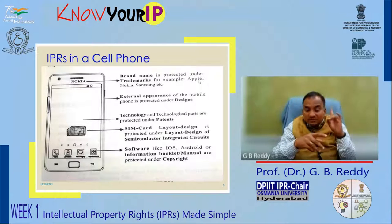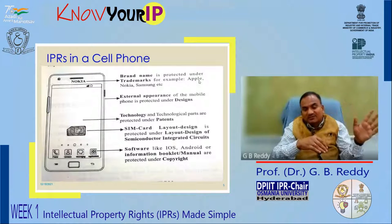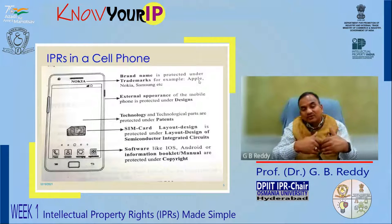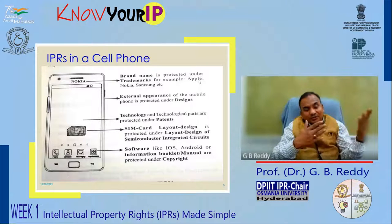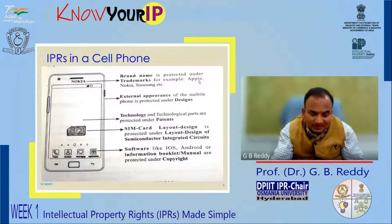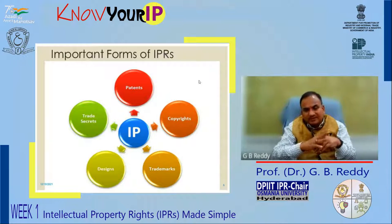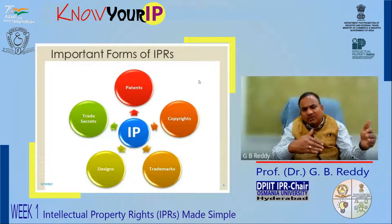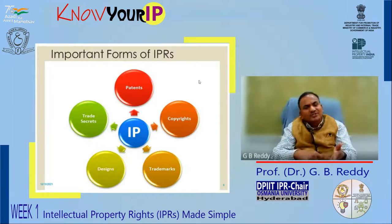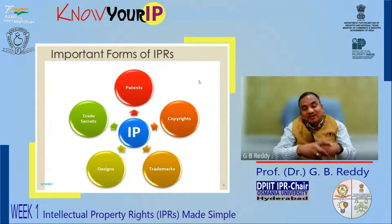If one cell phone can encompass five different kinds of intellectual property, just imagine right from our toe to our head — our watch, our pen, our apparel, our button — everything has a connection with intellectual property. Though we have seven well-recognized forms of intellectual property rights, you can see on your screen: patents, trademarks, designs, trade secrets — though they are not recognized in every jurisdiction — copyright, geographical indications of goods, plant varieties, plant breeders rights, traditional knowledge, indigenous knowledge, and so on.